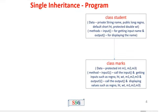Now let's look at an example program. There are two classes. The first class is named Student. The Student class contains a private member string name, public long register number, a default short integer height, and protected double weight. The Student class also contains one method — an input method for getting the student name, and an output method for displaying the student name, because name is a private variable and can only be accessed by methods of the same class.